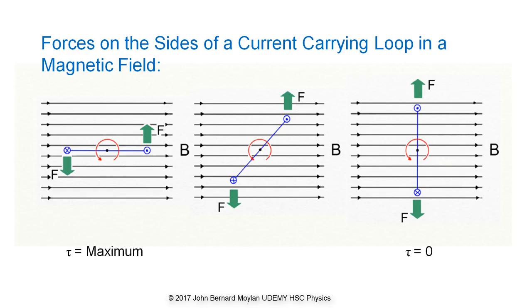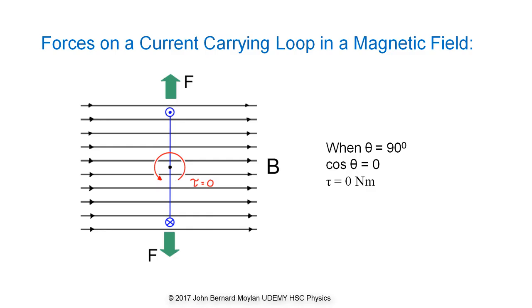When the loop is at right angles to the external magnetic field, the forces are oriented outwards on the sides of the loop and in line with the plane of the loop, as shown in the final diagram, and therefore exert no torque on the loop.